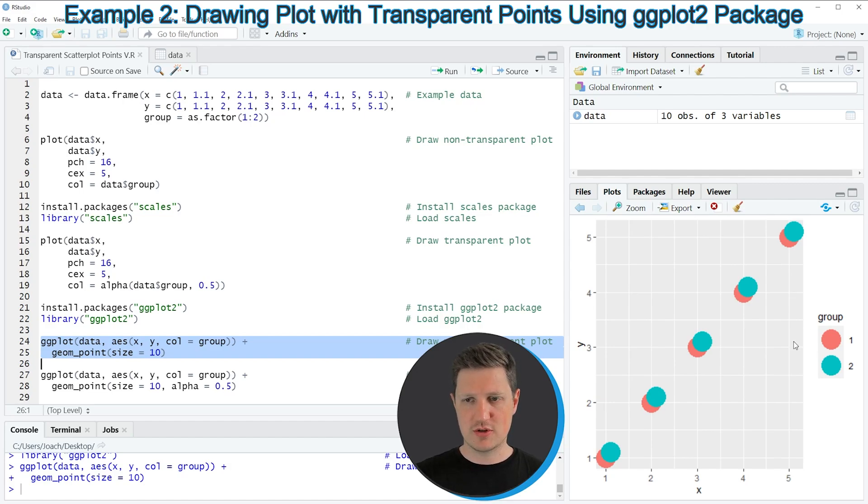And you can also see that the ggplot2 package is creating a legend to identify our two groups. Now, let's assume that we want to make these points in the ggplot2 plot transparent.